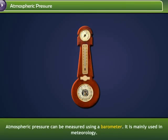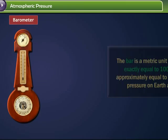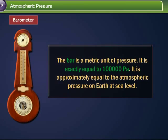Atmospheric pressure can be measured using a barometer. It is mainly used in meteorology. The bar is a metric unit of pressure. It is exactly equal to 1 lakh Pascal, and is approximately equal to the atmospheric pressure on Earth at sea level.